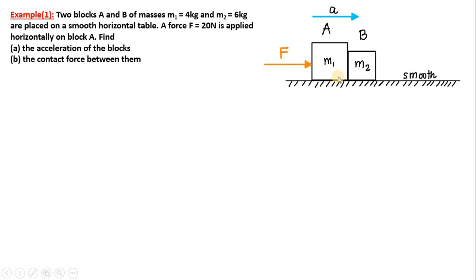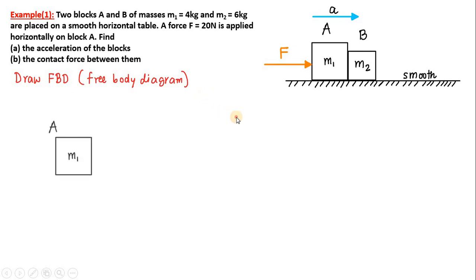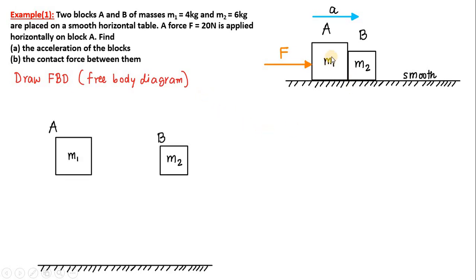Here is the situation given — two blocks A and B and a force F is applied. The general procedure for solving Newton's laws of motion questions is to draw the FBD first, which is the free body diagram. A free body diagram is a diagram in which we show all the objects in the question separated from each other, with all forces acting on them due to external influences.